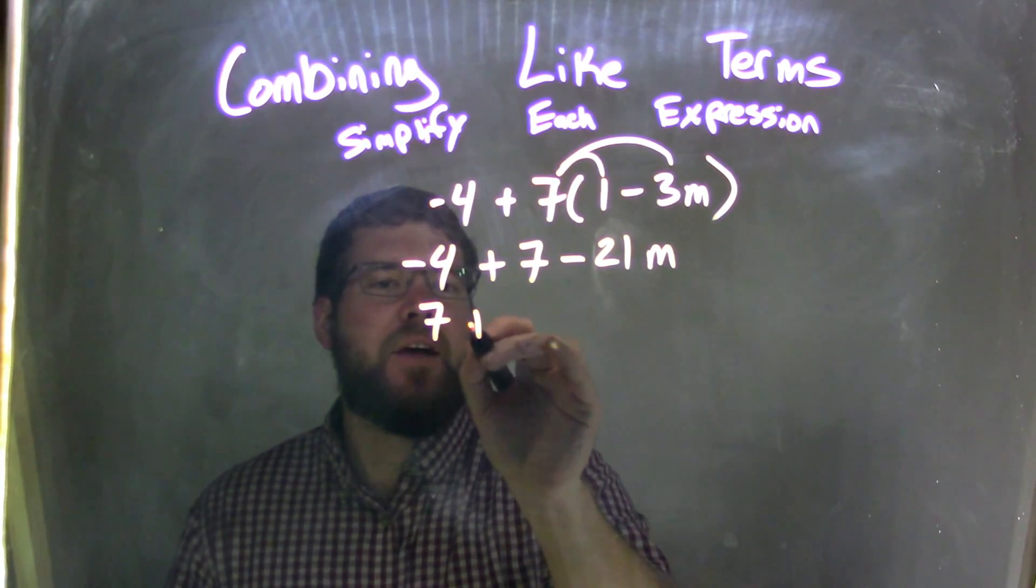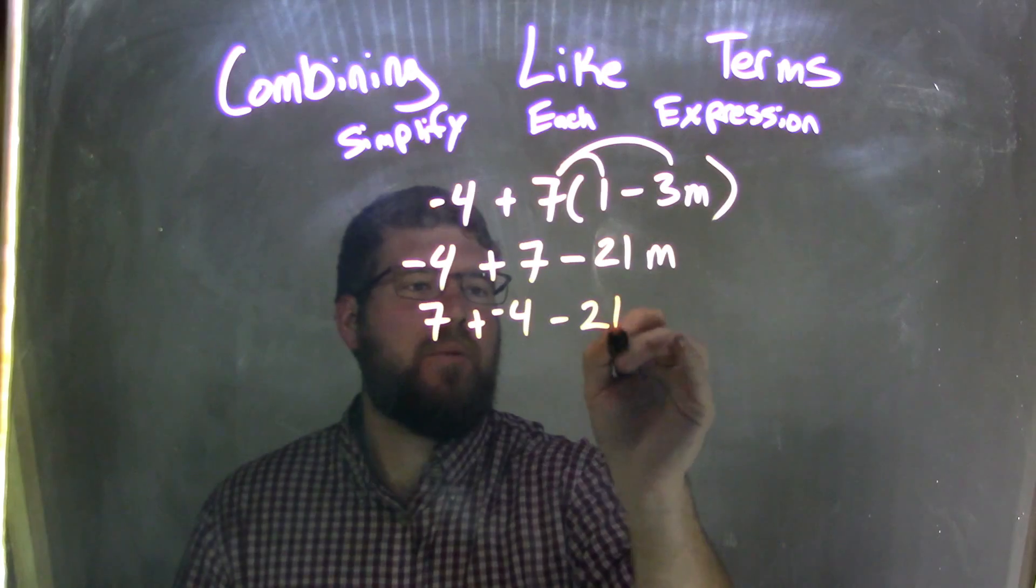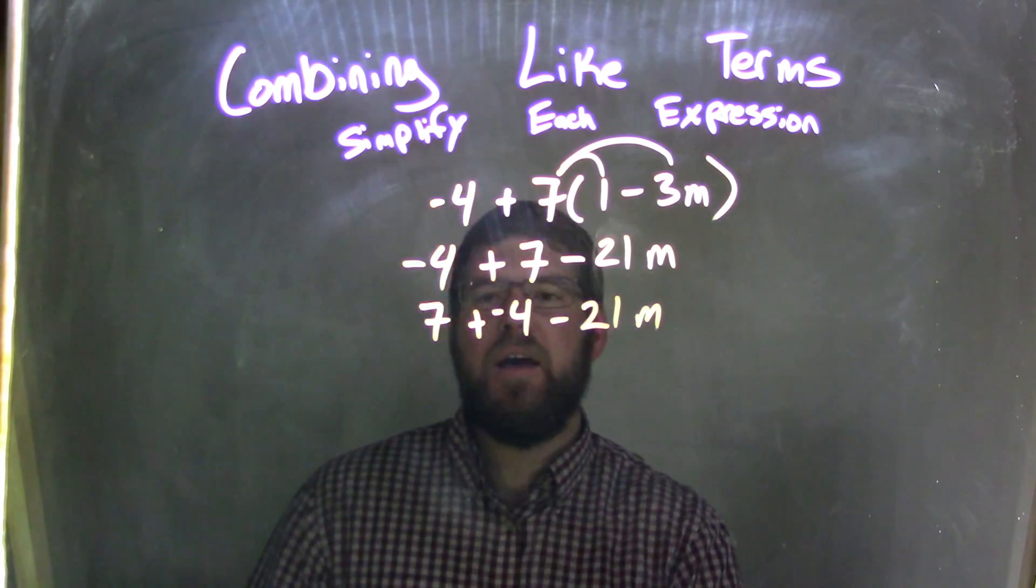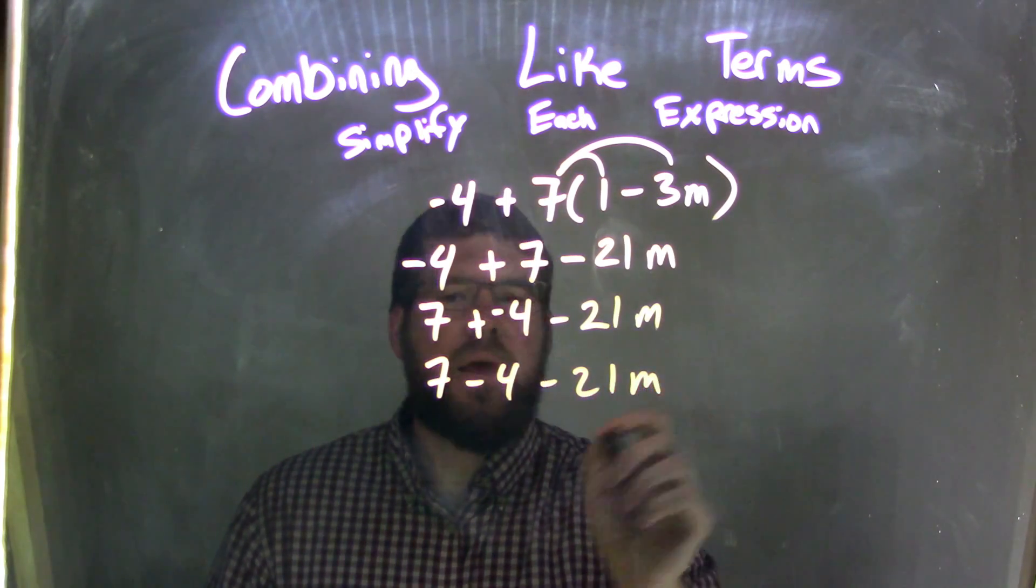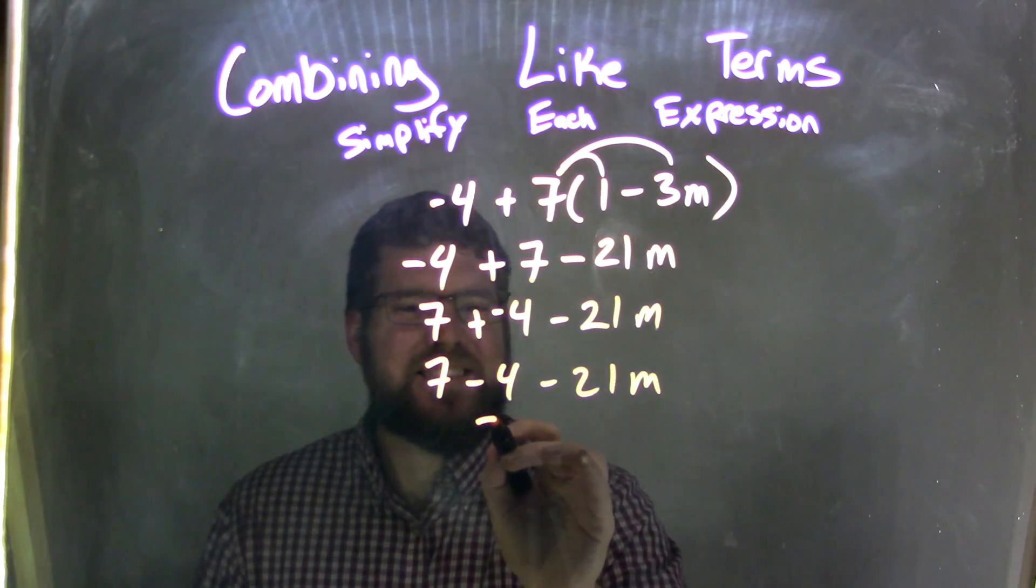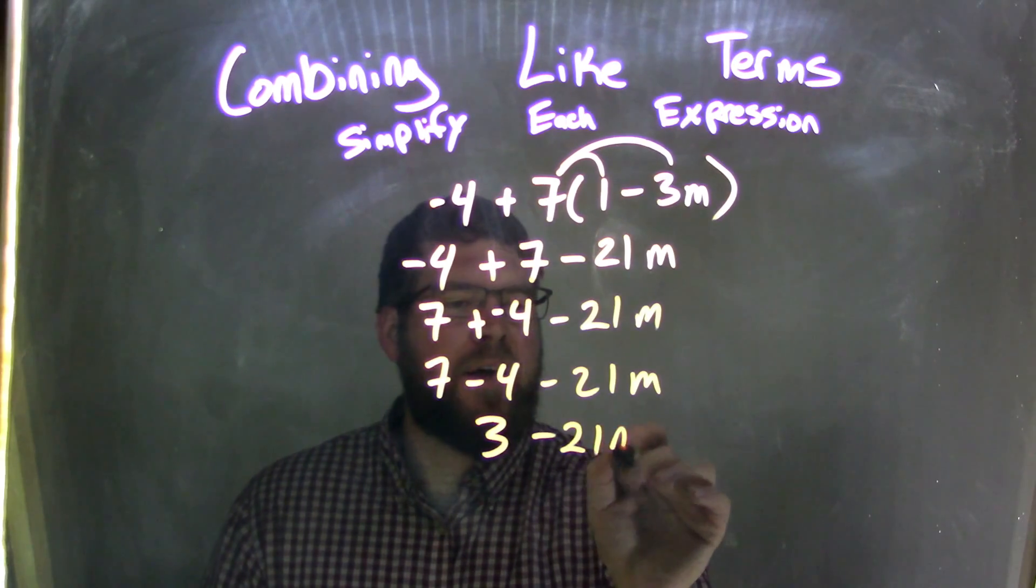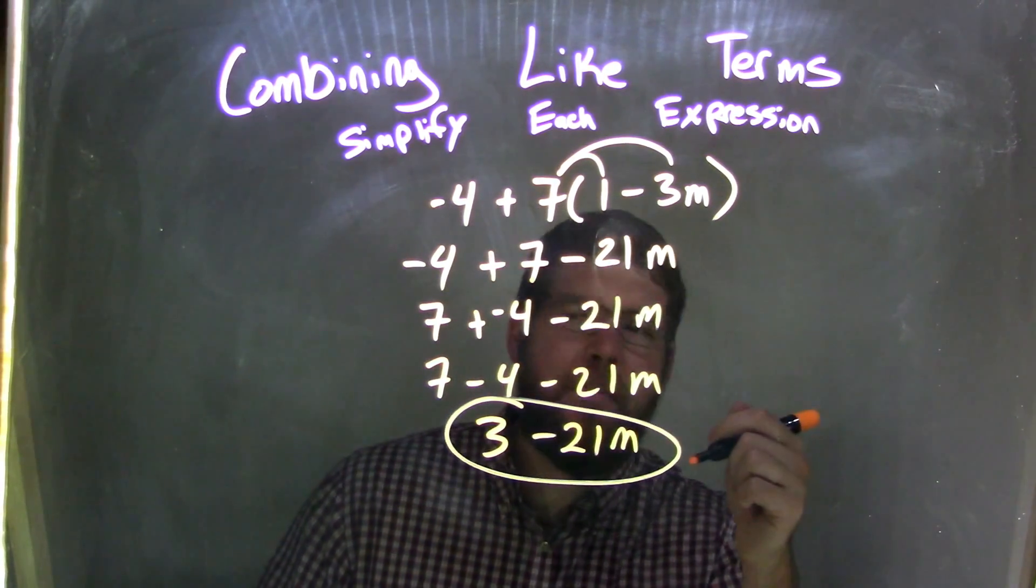And we have 7 plus a negative 4 minus 21m. Make sure we're breaking down. And we have that 7 plus a negative 4 is 7 minus 4 minus 21m. And 7 minus 4 is 3 minus 21m. And that is our final answer. They are not like terms. We can't combine.